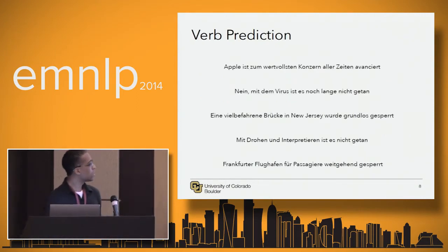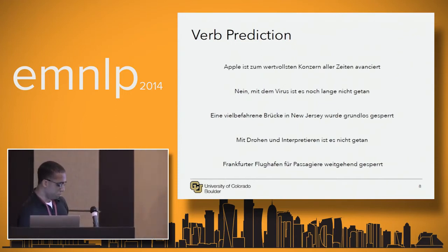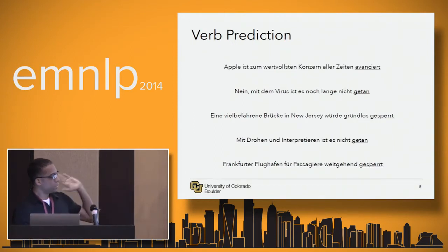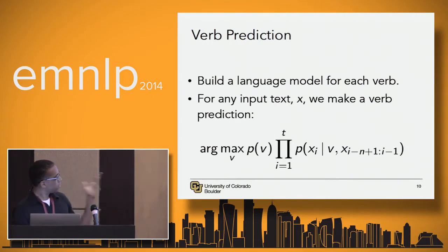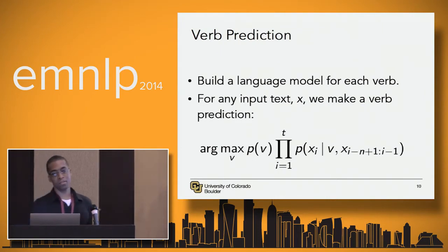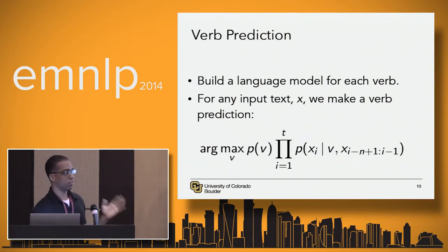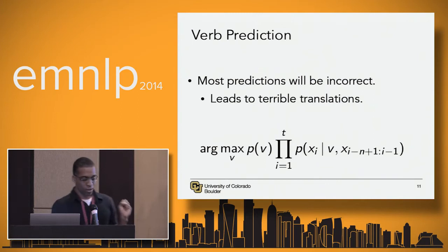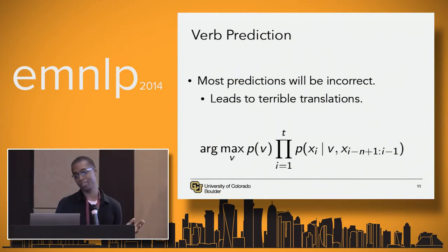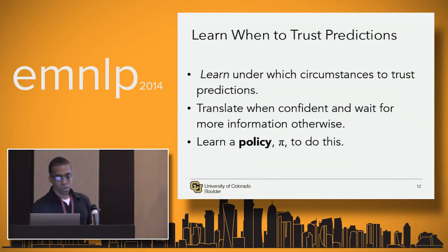To do this, we use standard language models. We have some German sentences that end in verbs, and we essentially divide up the corpus and build a language model for each verb. We take the language model that maximizes the probability of the context observed up to that point and choose that as our verb to predict. As you might imagine, this doesn't always work well, and this will lead to bad translations if we pick the wrong verb. So we have to learn when to trust these predictions and when not to.